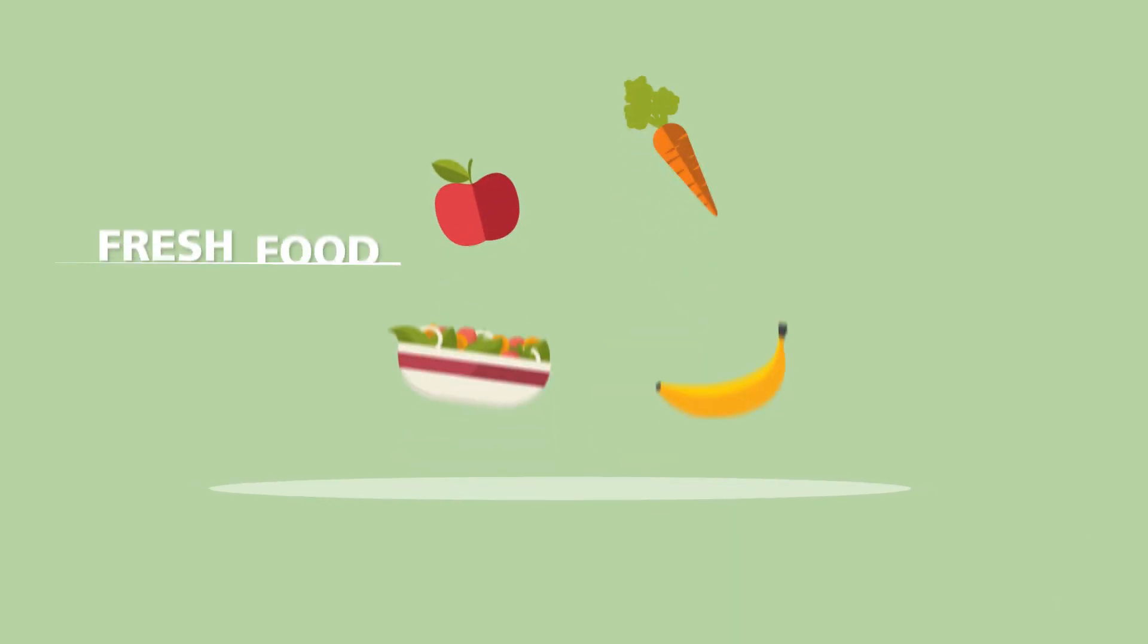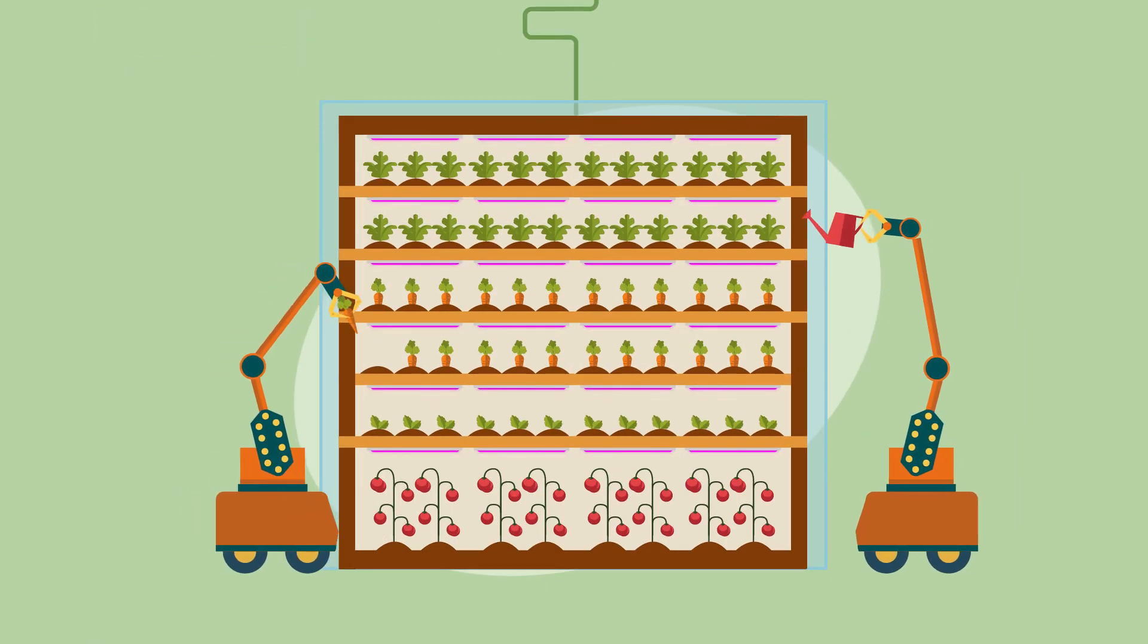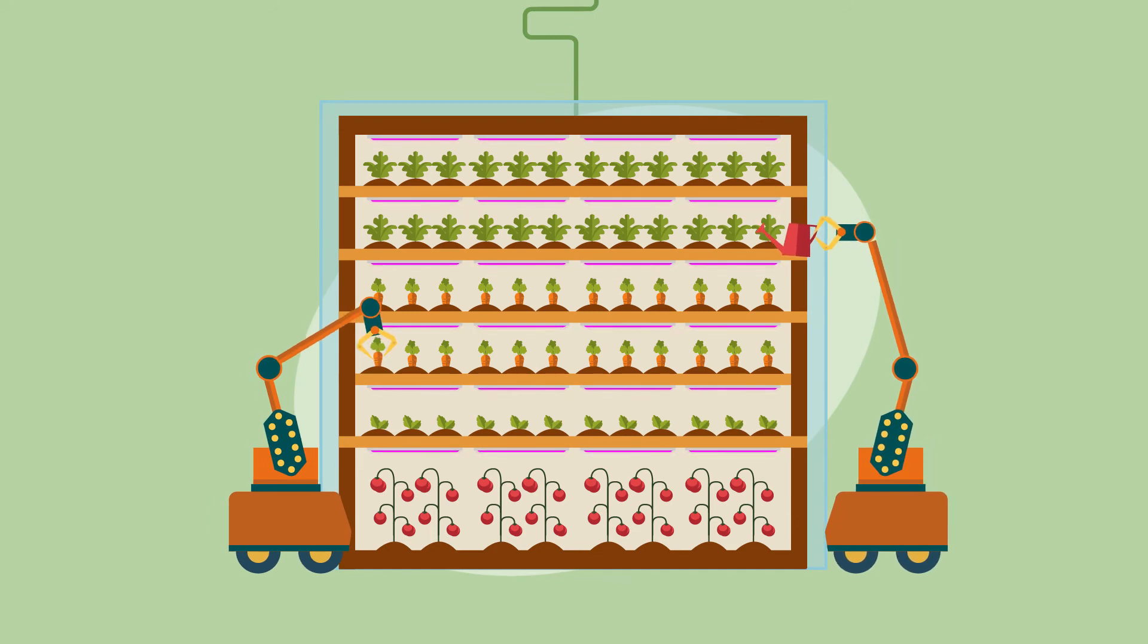We will eat fresh and pesticide-free food grown in the subsoil and specific automatic vertical farms, lit up by LED technology. In a few words, fruit and vegetables will grow under us.